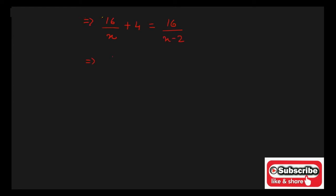Now, take the LCM in the LHS. You will be getting 16 plus 4X upon X is equal to 16 upon X minus 2. Cross multiply the terms: 16 plus 4X into X minus 2 is equal to 16 into X is 16X.